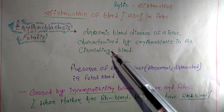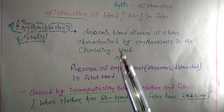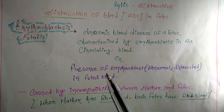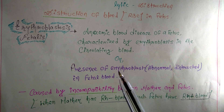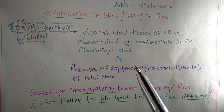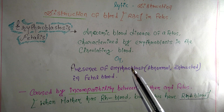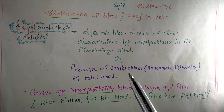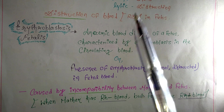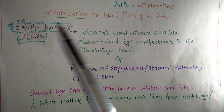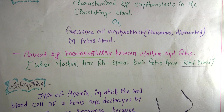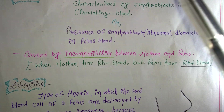To put it simply: the presence of erythroblasts — meaning abnormal, destroyed, and totally damaged RBCs — in the fetal blood is called RH incompatibility or erythroblastosis fetalis.